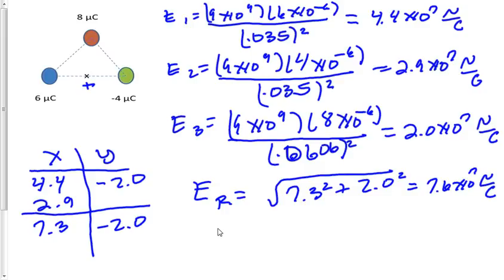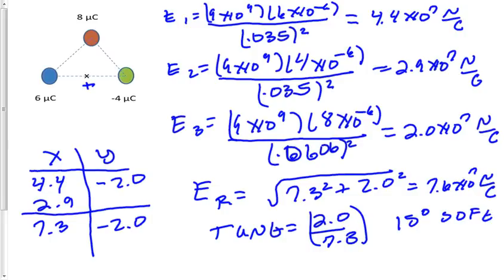And now we need to figure out the angle. So tangent of theta is going to equal our y over x. So 2.0 divided by 7.3, and I will need to take the inverse tangent of that. And that's 15 degrees south of east. And that's our resultant vector.